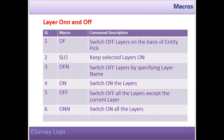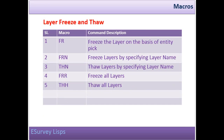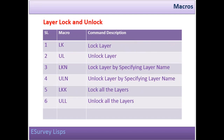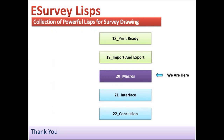Layer on and off: Macros for switching layer on and off status in a variety of methods. Layer freeze and thaw: Macros for switching layer freeze/thaw status in a variety of methods. Layer lock and unlock: Macros for switching layer lock/unlock status in a variety of methods. In the next section, I will conclude this course after summarizing things we have learned so far.